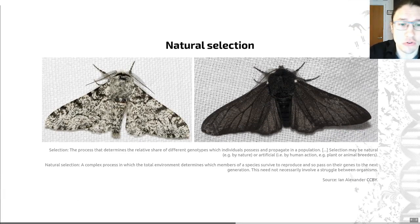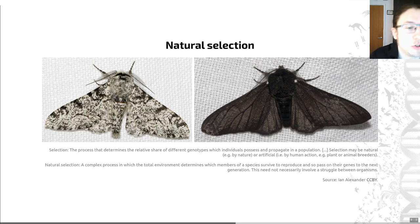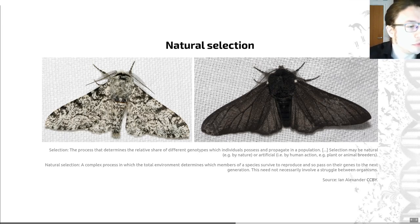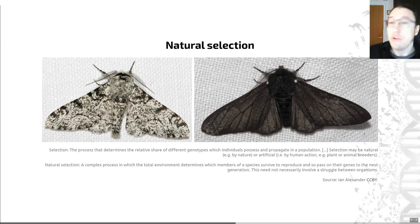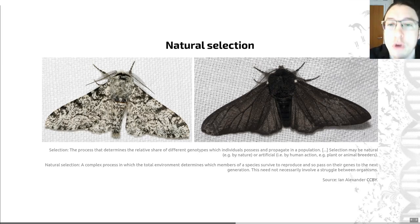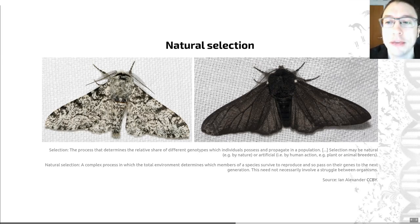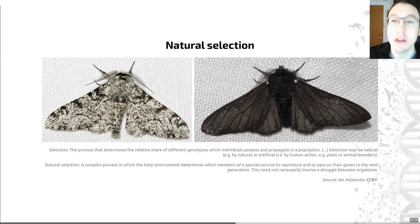I've put a definition of both selection and natural selection on the slide for you here. The definition of natural selection is: a complex process in which the total environment determines which members of a species survive to reproduce, and so pass on their genes to the next generation. This need not necessarily involve a struggle between organisms. Long story short, what that really means is that the fittest organisms will produce the most offspring, and therefore, over time, they will start to dominate a population over those organisms that are less fit, and their traits will spread through a population.